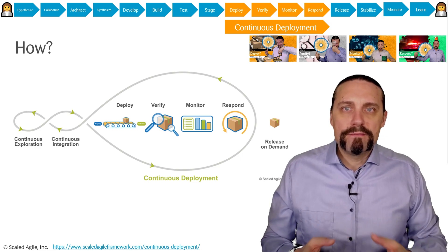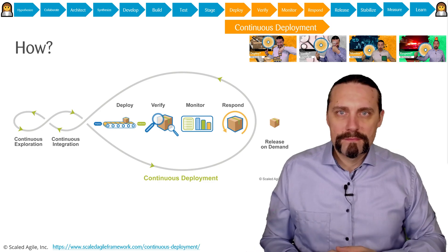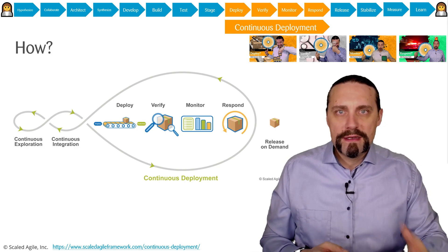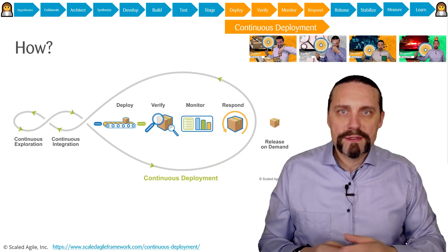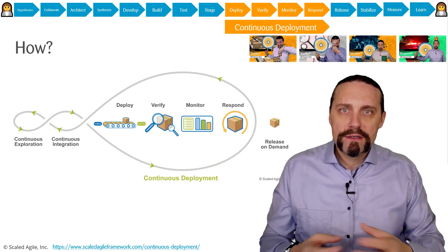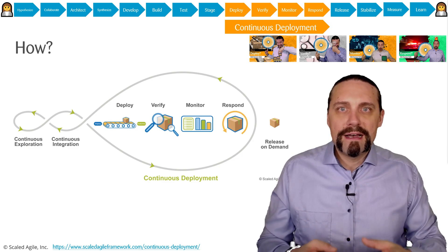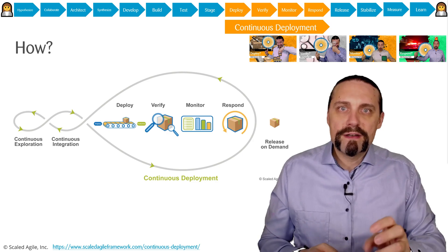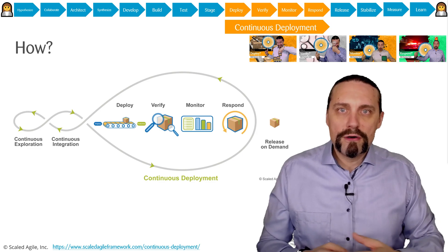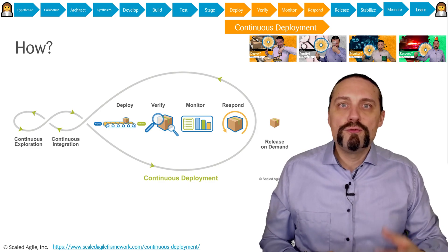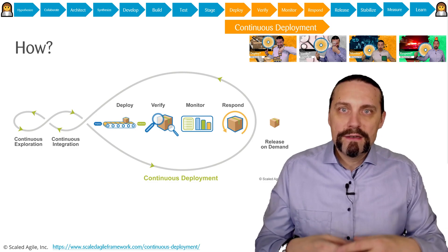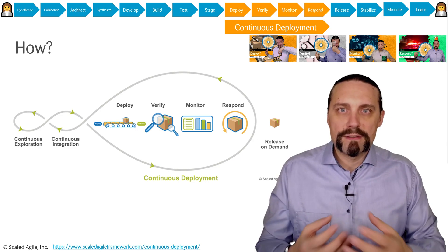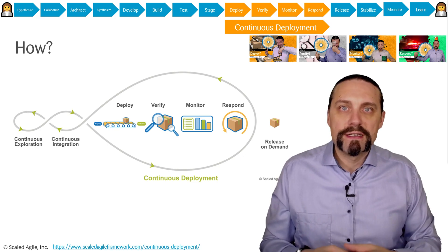To deploy we need to separate deployment from release. A deployment is bringing the compiled code with the feature toggle off into production; a release is switching on the feature toggle to release the functionality to users. A feature toggle is simply an if statement in code where we can configure whether the feature is on or off. This enables us to do dark launches — bringing functionality into production without releasing it.